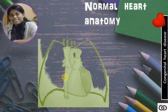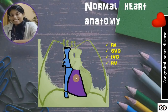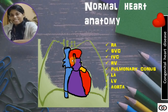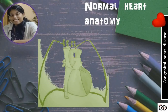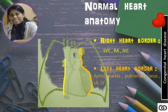The normal heart anatomy. This is the right atrium, into which drain the superior vena cava and the inferior vena cava. The right atrium empties itself into the right ventricle, which pushes blood to the lungs through the pulmonary artery. Oxygenated blood comes to the left atrium, then the left ventricle, and finally through the aorta it is distributed to the whole body. The right heart border is formed by the superior vena cava, right atrium, and a part by the IVC. While the left heart border is formed by the aortic knuckle, the pulmonary conus, left atrium, and mainly by the left ventricle.